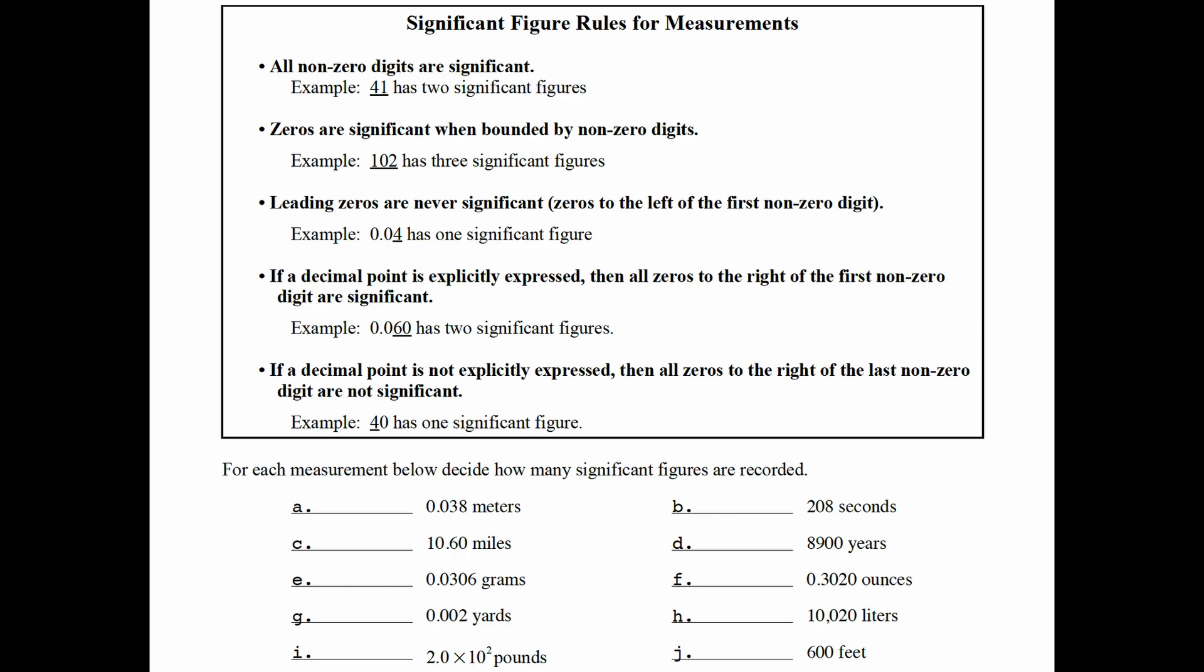The next rule is zeros are significant whenever bounded by nonzero digits. So here we see in the example 102, there are three significant figures. The zero in the middle is considered significant because it has a nonzero digit on the left and a nonzero digit on the right.